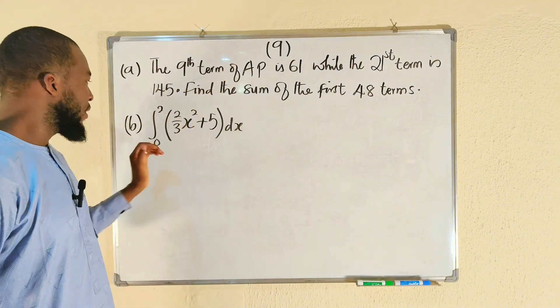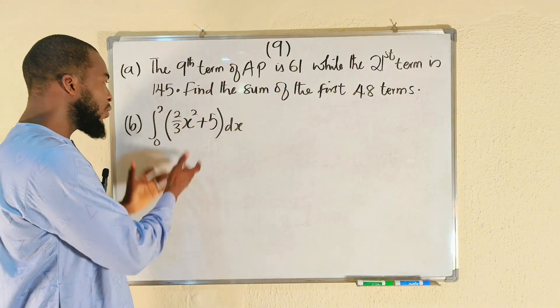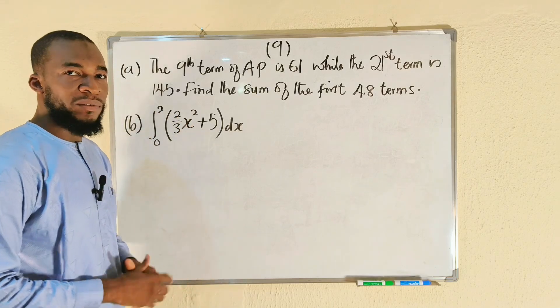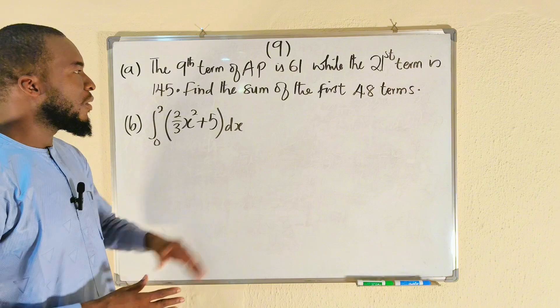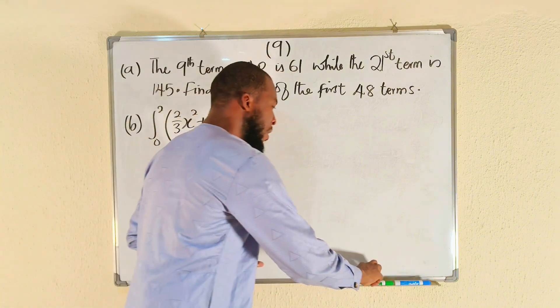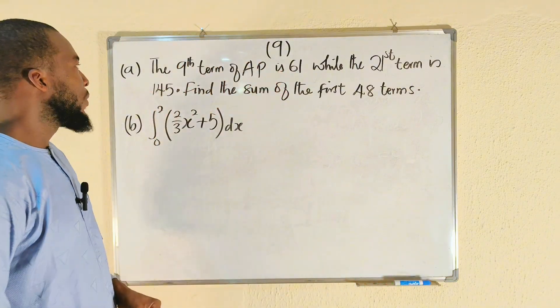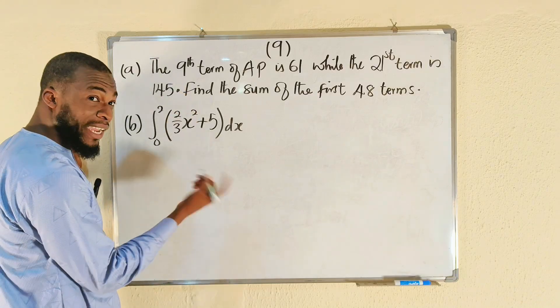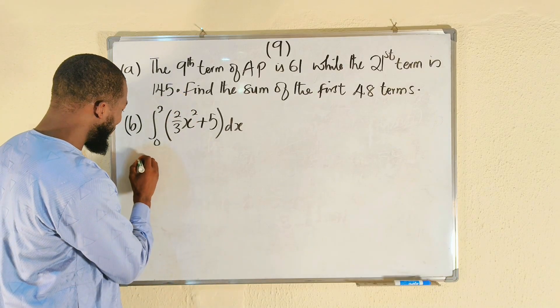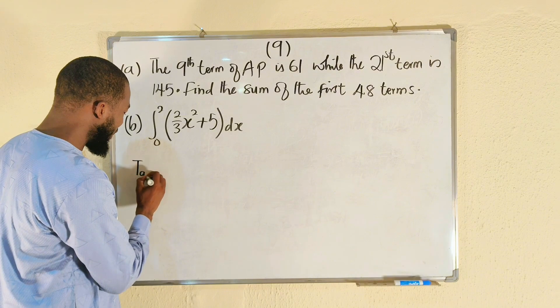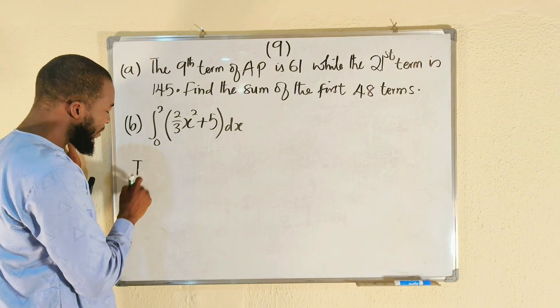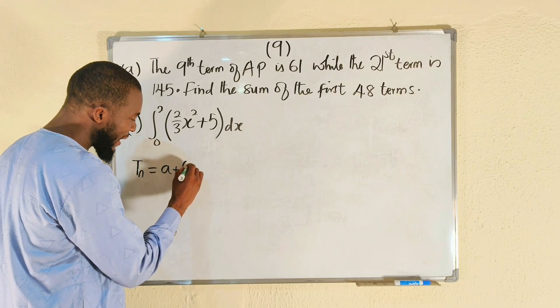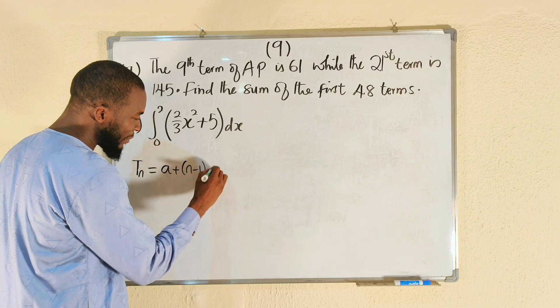Part B of question 9 asks us to evaluate this definite integral of the function 2 over 3x squared plus 5 with respect to x. Let's get started. To solve this problem, let us write the data first. Term number nine, T9, is given. Remember, if you want to find term number nine, every single term Tn is equal to a plus (n minus 1) multiplied by d.